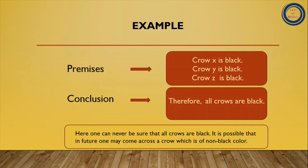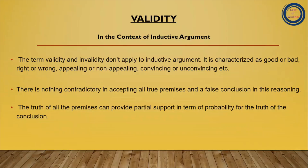For example, premises: crow X is black, crow Y is black, crow Z is black. So the conclusion is therefore all crows are black. Is example se hum yeh dekh pa rahe hain ki it is possible that in future one may come across a crow which is of non-black color. So is liye hamne kaha ki the truth of all premises can provide partial support in terms of probability for the truth of the conclusion. This is valid in the context of inductive argument.